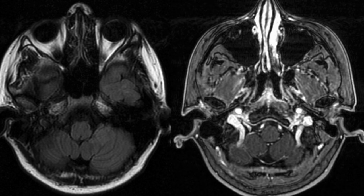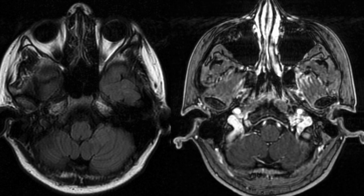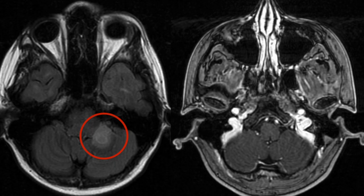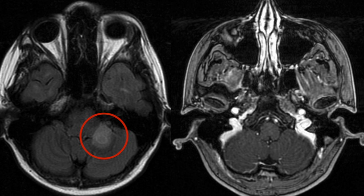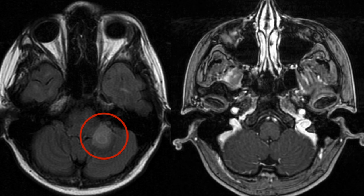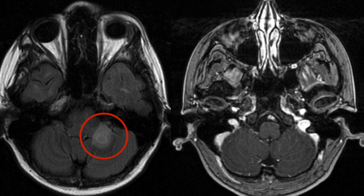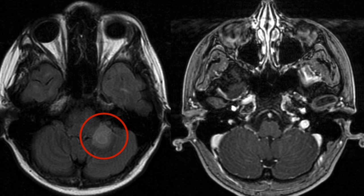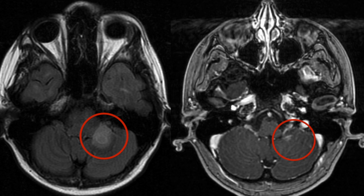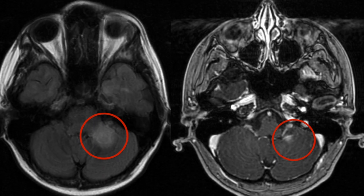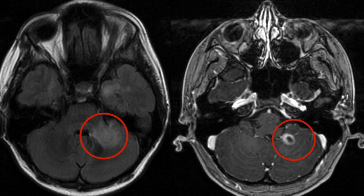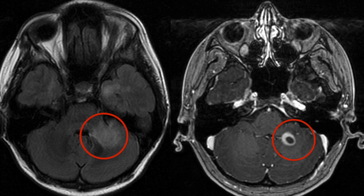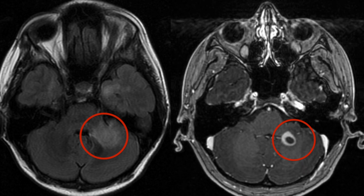As we scroll from the bottom of the brain up, we come across our first concerning lesion which I've circled in red. This part of the brain is called the middle cerebellar peduncle and it's involved in balance and coordination. It stands to reason the patient shares that she was walking around like she was drunk, even though she assures me that she was not.